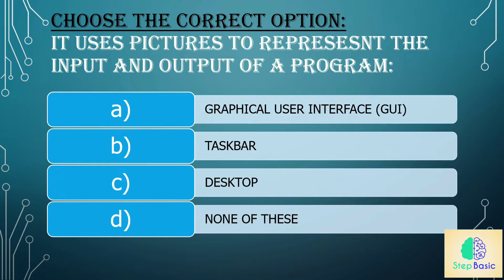Question 2: It uses pictures to represent the input and output of a program. Options are: a) GUI, b) taskbar, c) desktop, or d) none of these. The answer is a) GUI, that is Graphical User Interface.